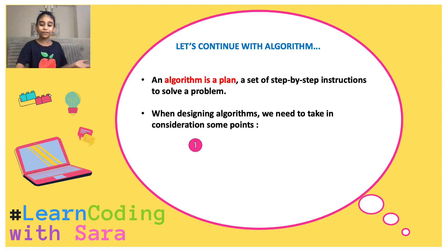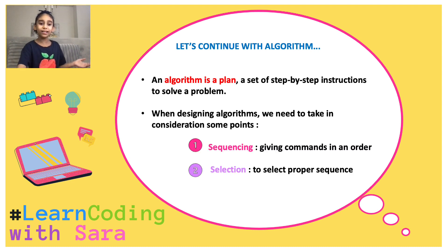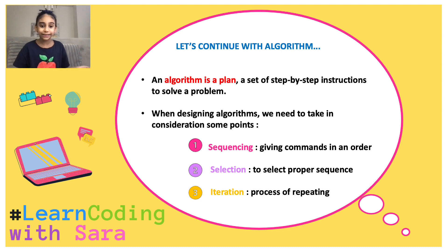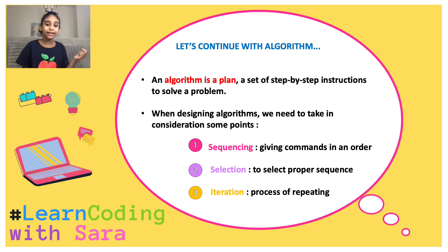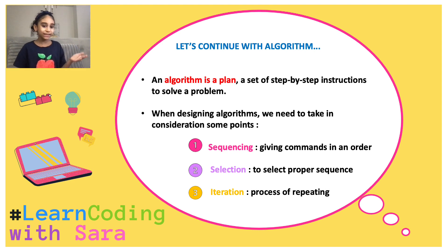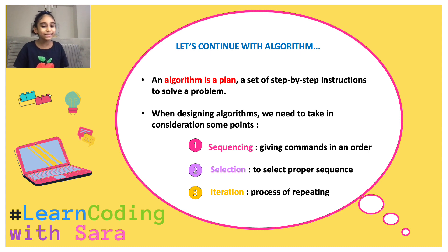When designing algorithms, we need to think of three points. First of all, sequencing, which means giving commands in an order. Then, selection, which means to select the proper sequence. Finally, iteration, which is the process of repeating.